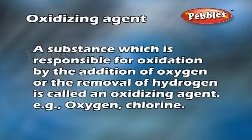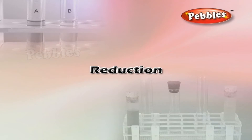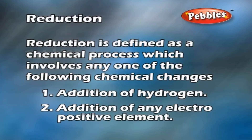An oxidizing agent is a substance which is responsible for oxidation by the addition of oxygen or the removal of hydrogen. Examples of oxidizing agents are oxygen and chlorine. Reduction is defined as a chemical process which involves any one of the following chemical changes.